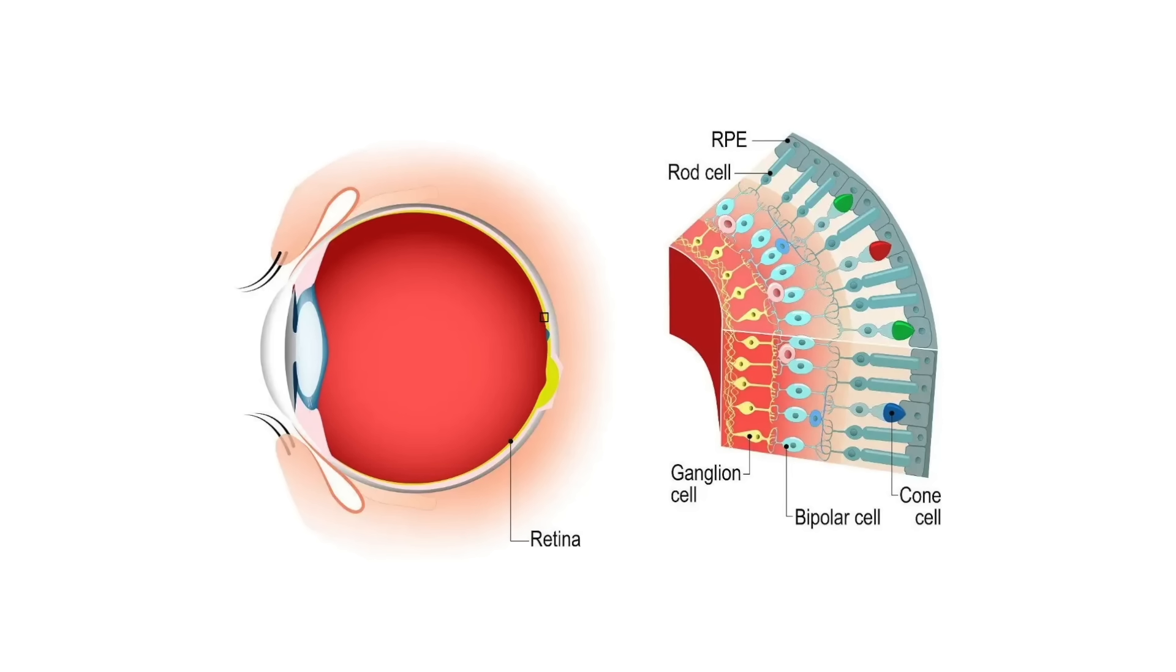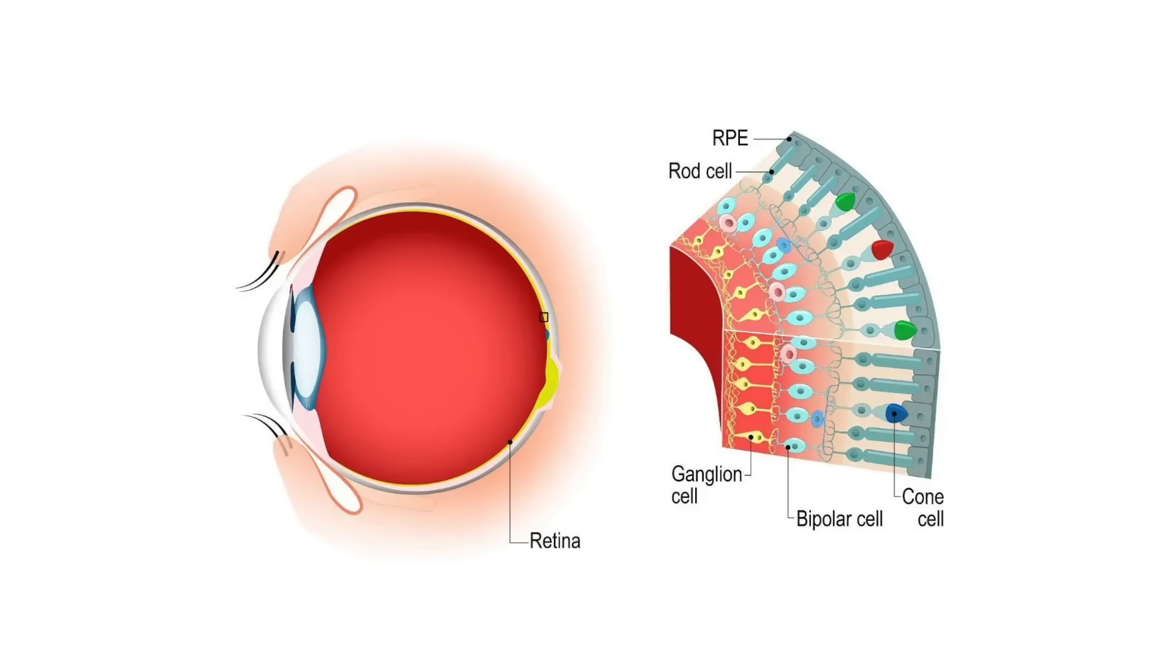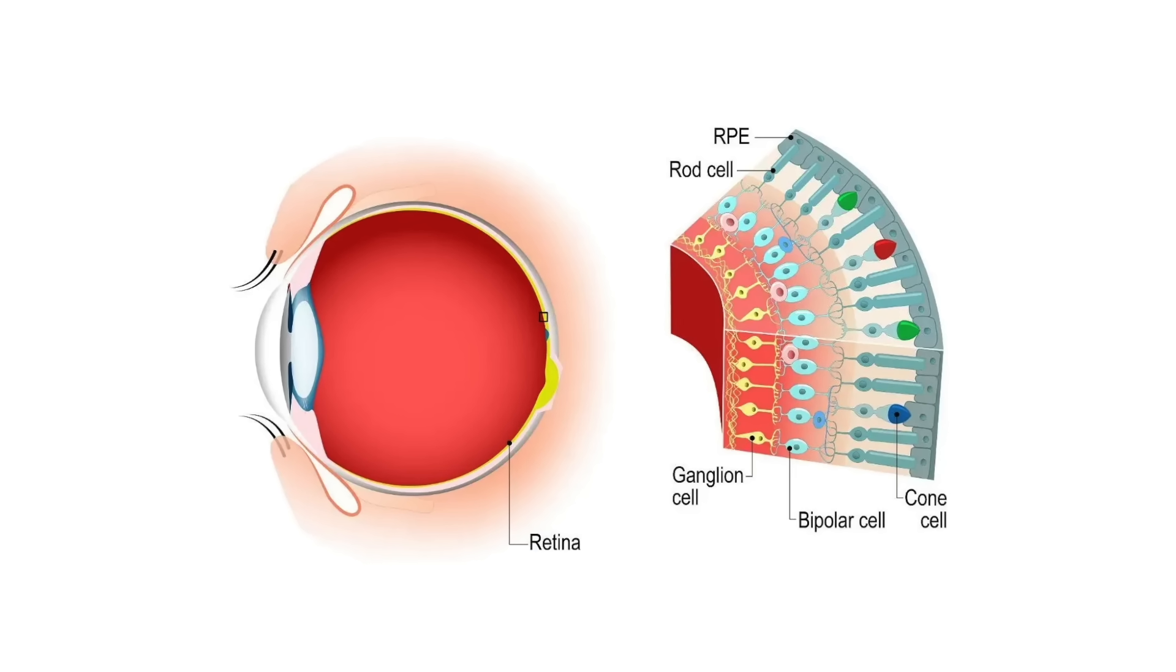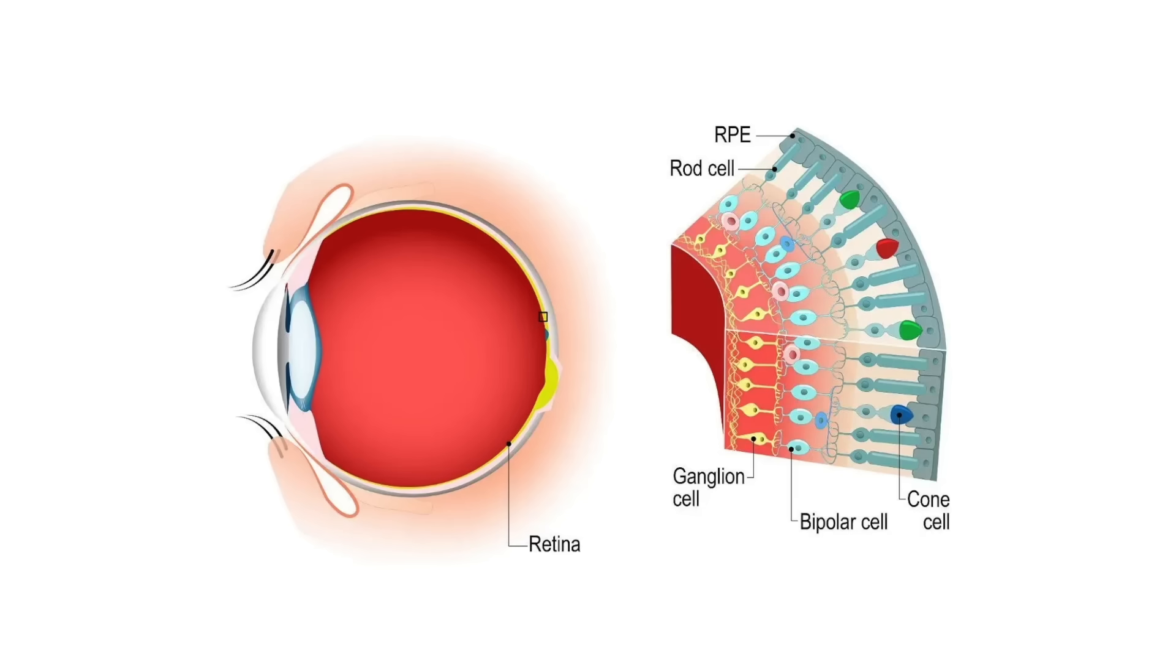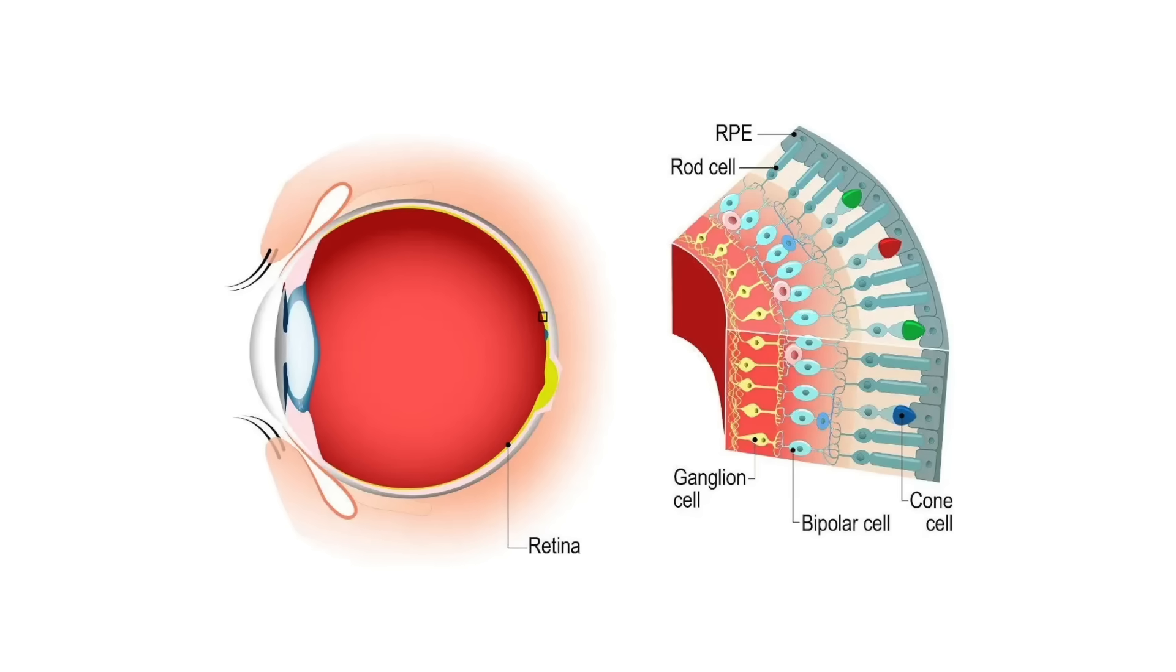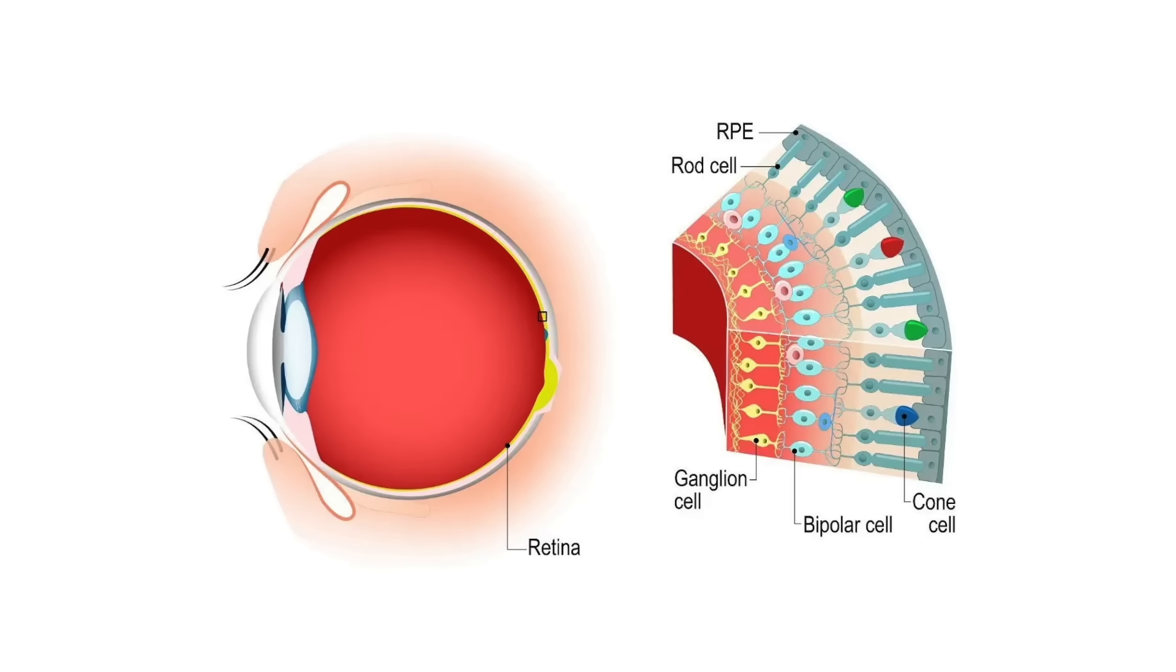The human eye sees light and color by the use of cells called rods and cones. It's all squishy biology stuff. Cones are the cells that help us see color. And there are three kinds of cones.